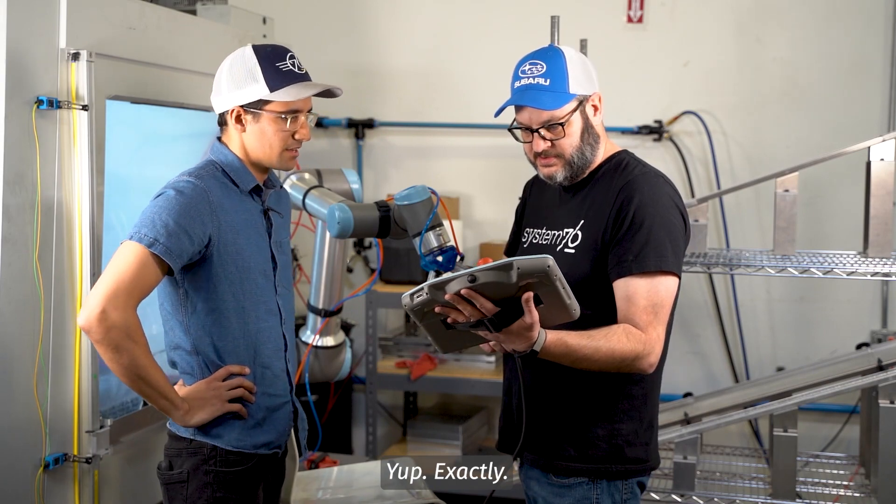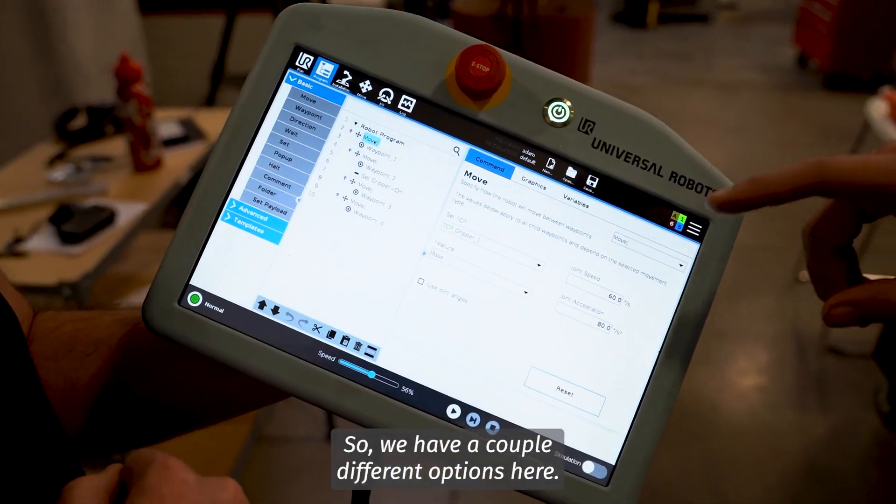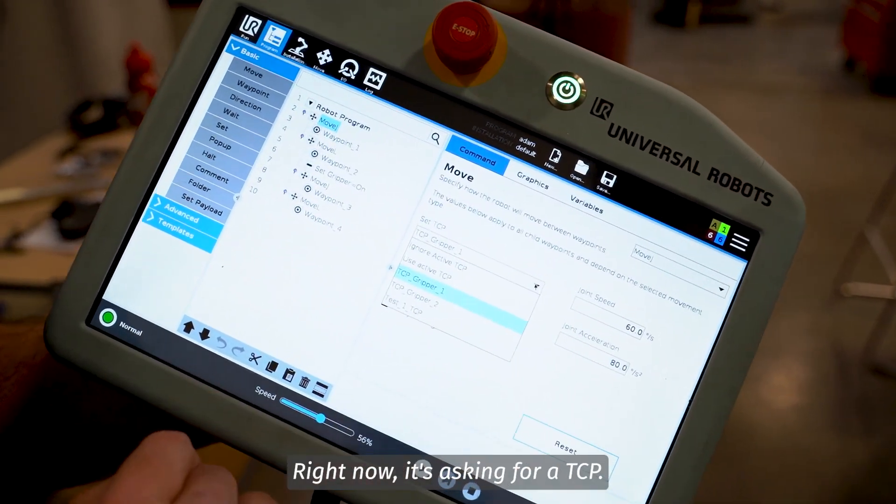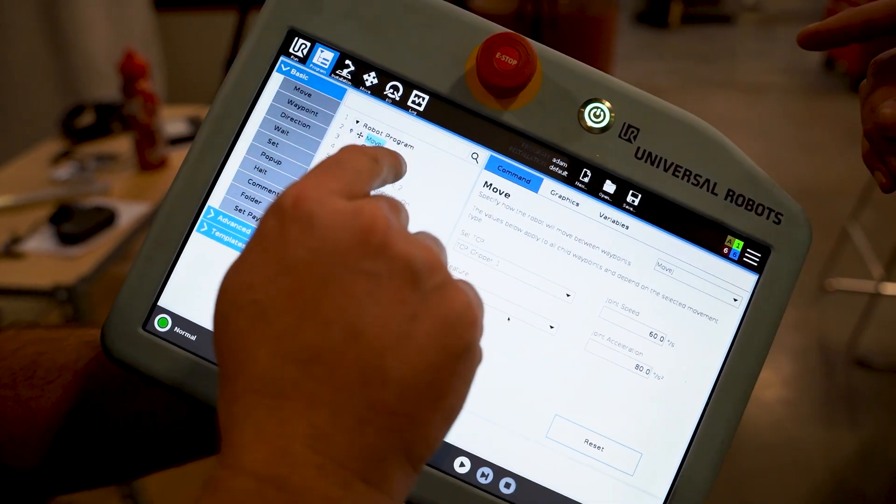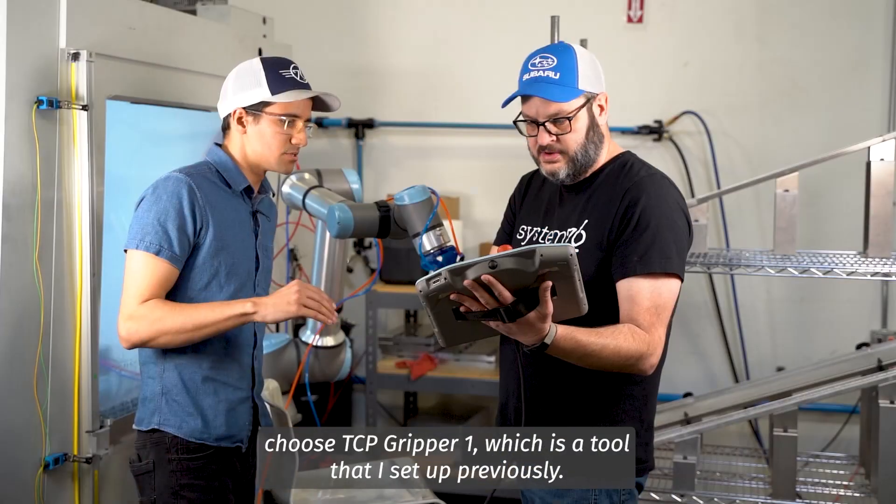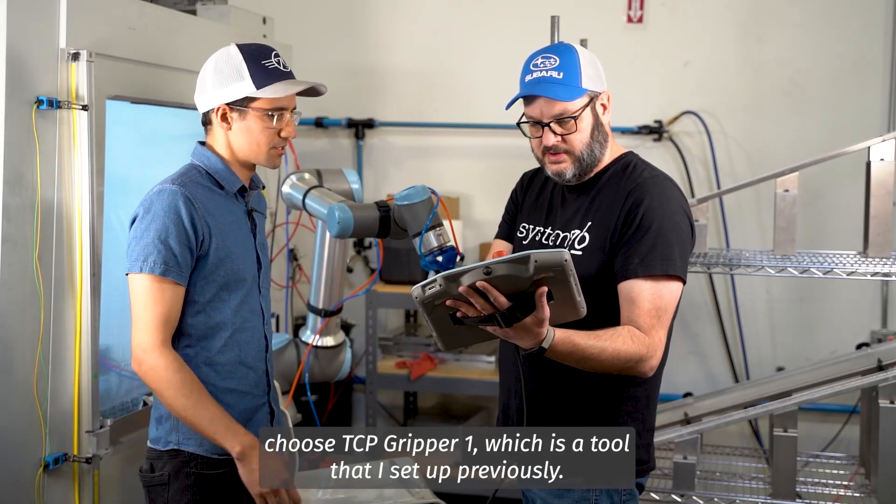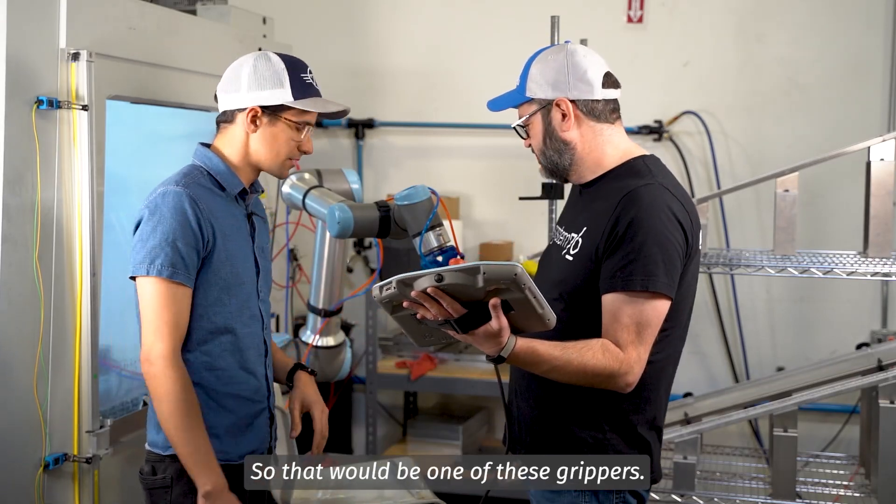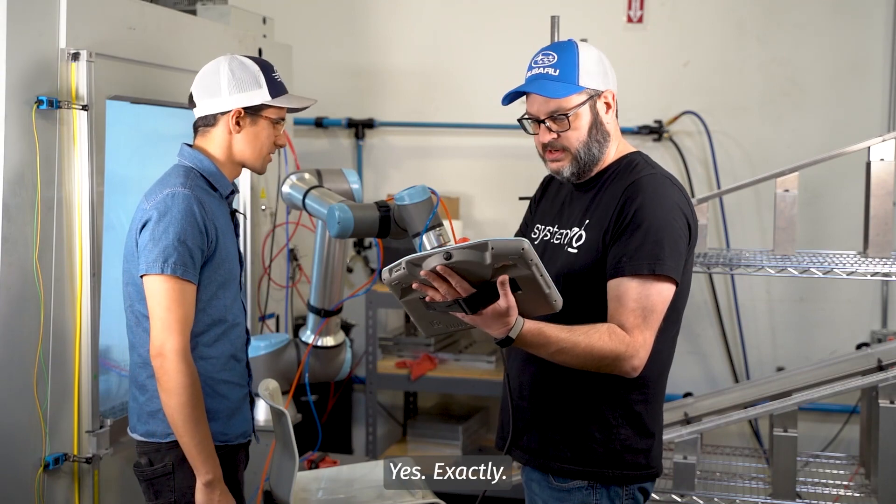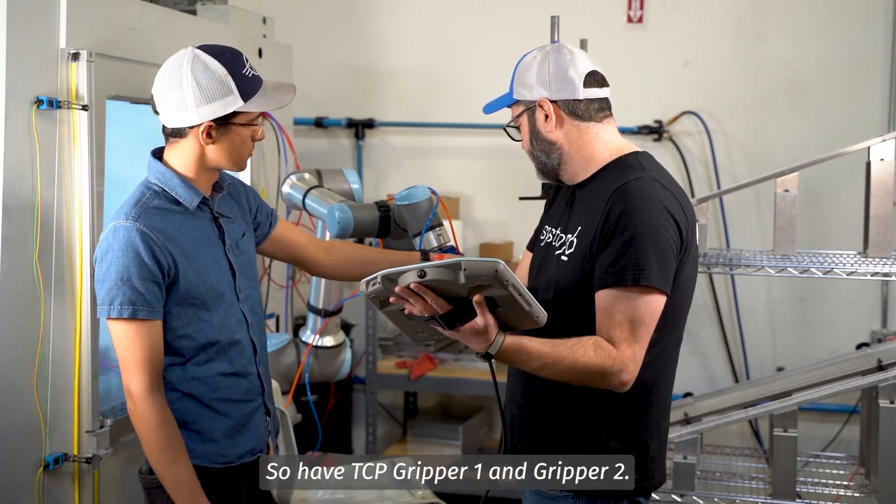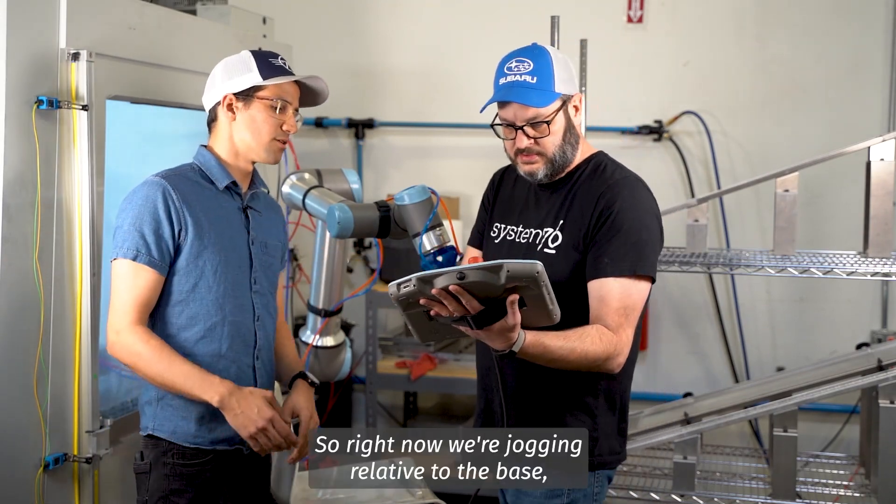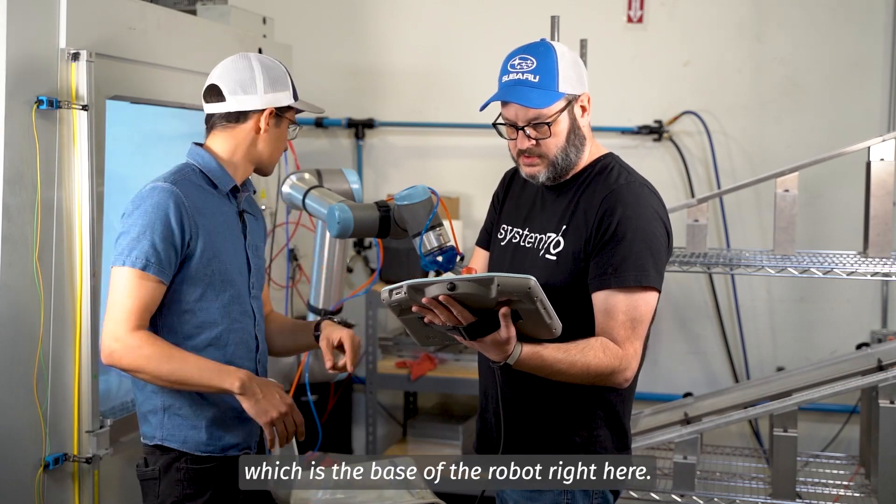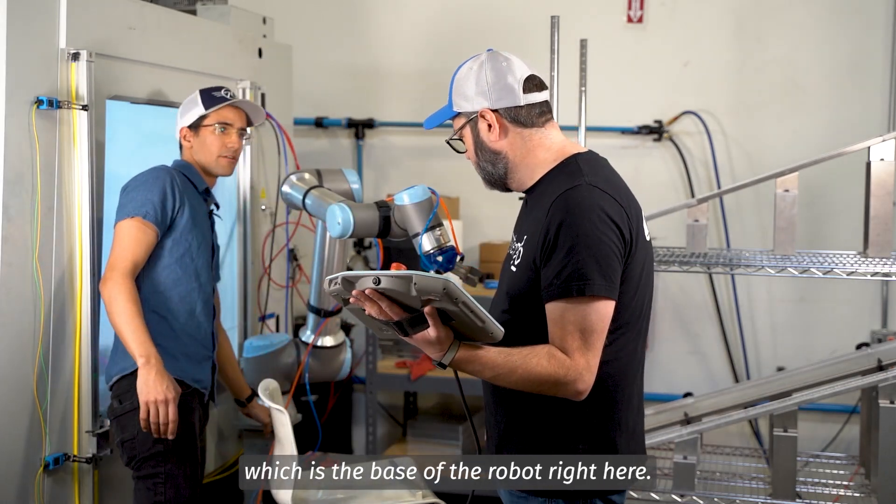Yep, exactly. So we have a couple different options here. Right now it's asking for a TCP. Go ahead and click the drop down menu, and then choose TCP gripper one, which is a tool that I set up previously. So that would be one of these? Yes, exactly. So I have TCP gripper one and gripper two.